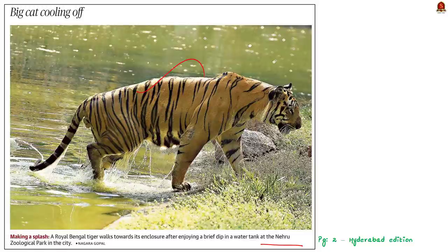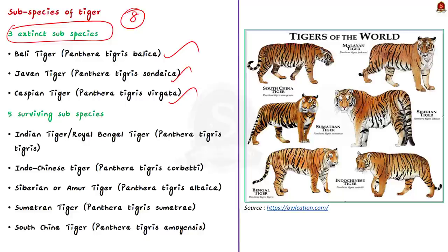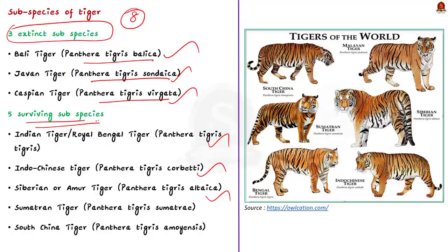Moving to the next article on Indian tigers. There were 8 subspecies of tiger that existed in the past, out of which 3 have gone extinct: the Bali tiger, Javan tiger, and Caspian tiger. The 5 surviving subspecies are: the Indian tiger or Royal Bengal tiger, the Indo-Chinese tiger, the Siberian or Amur tiger, the Sumatran tiger, and the South China tiger. Recent genetic studies indicate that the Caspian and Siberian tigers may have been from the same subspecies. Recent reports also indicate the South China tiger is getting extinct in the wild.